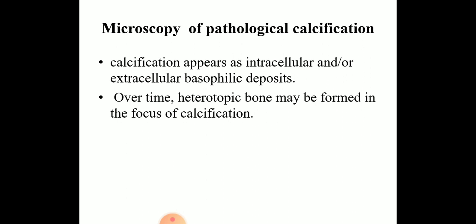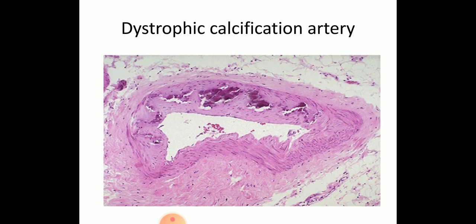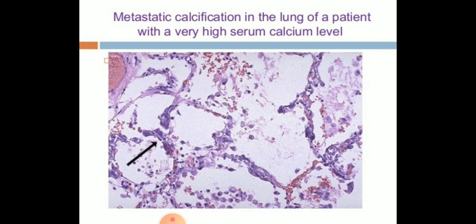Microscopically, calcification appears as intracellular or extracellular basophilic deposits. Over time, heterotopic bone may be formed in the focus of calcification. This figure shows dystrophic calcification in the artery with basophilic deposits in the media. And this figure demonstrates metastatic calcification in the lung of a patient with a high serum calcium level, showing basophilic deposits in the alveolar wall.